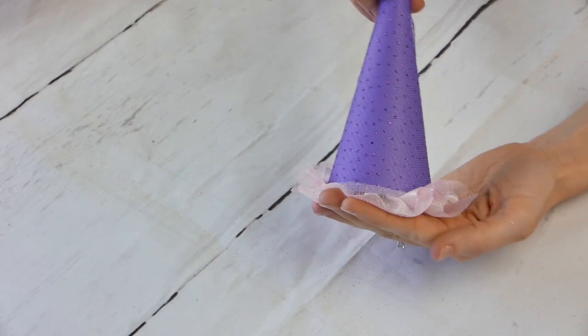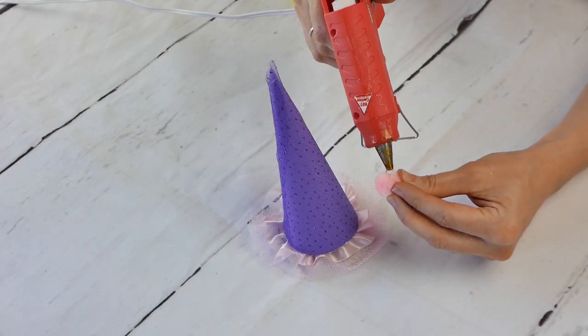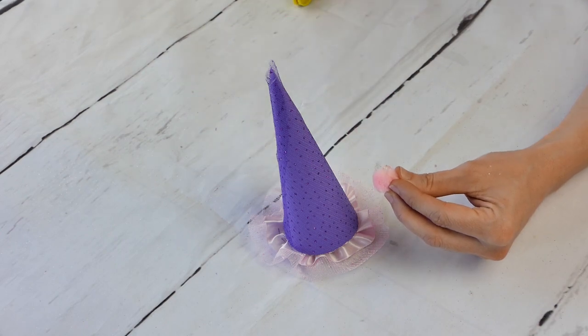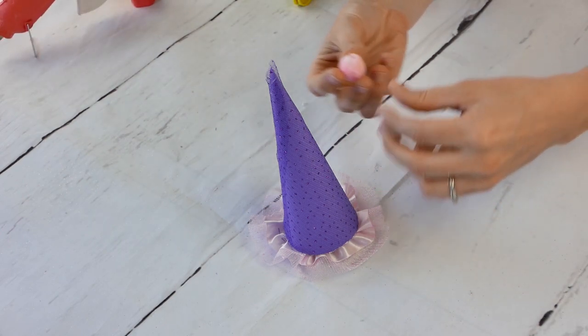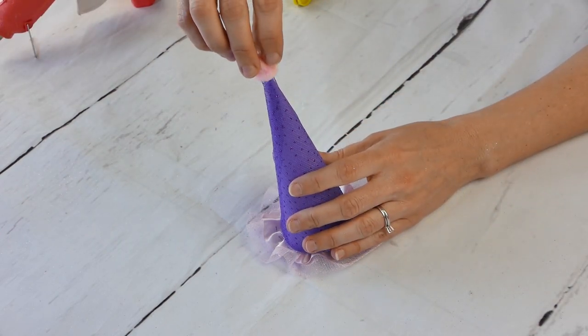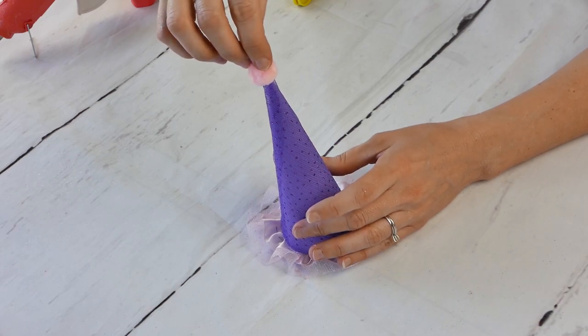As you can see, we have obviously some extra of the tulle on the outside and you just cut it to size, whatever that you'd like. Maybe you want a little bit longer, but we wanted it nice and short so it makes it a really dainty look. So once that's done, super cute. We just have one more thing to do. This is basically just like a little fluffy circle that you put on top.